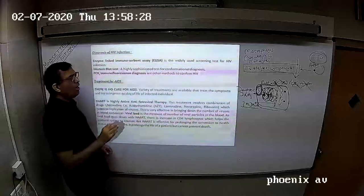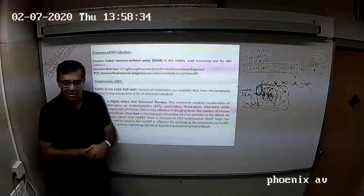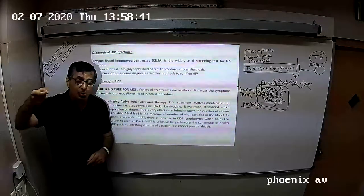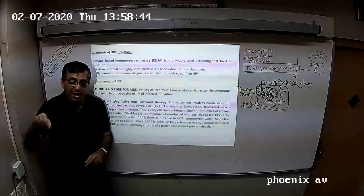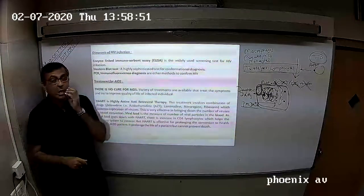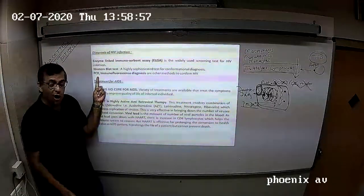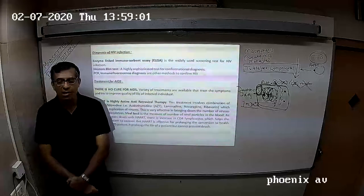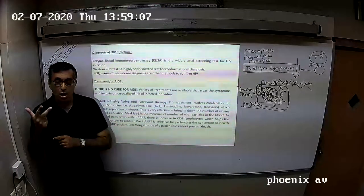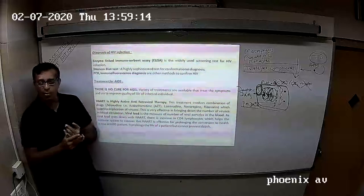Along with ELISA, a more sophisticated test called the Western blot test is used, which detects HIV surface proteins GP120, GP41, P17, and P24. You can also perform PCR - polymerase chain reaction - and immunofluorescence diagnosis. The protocol is: do ELISA first, then confirm with Western blot, or perform PCR with immunofluorescence diagnosis. By these mechanisms, HIV diagnosis is confirmed.